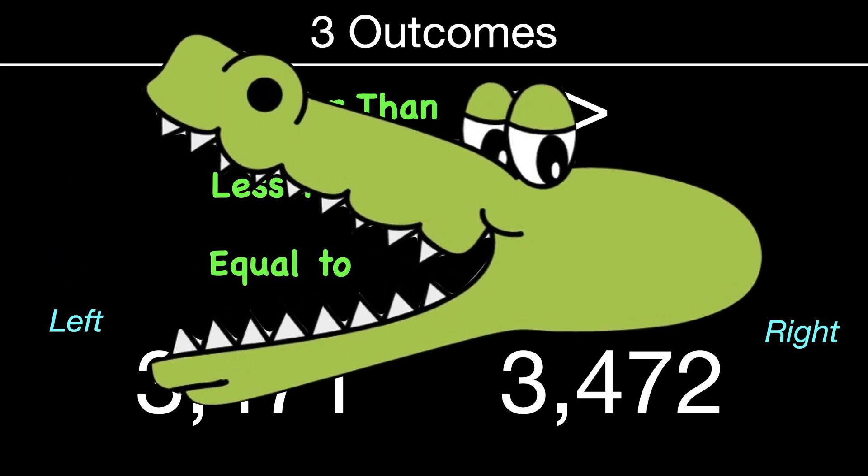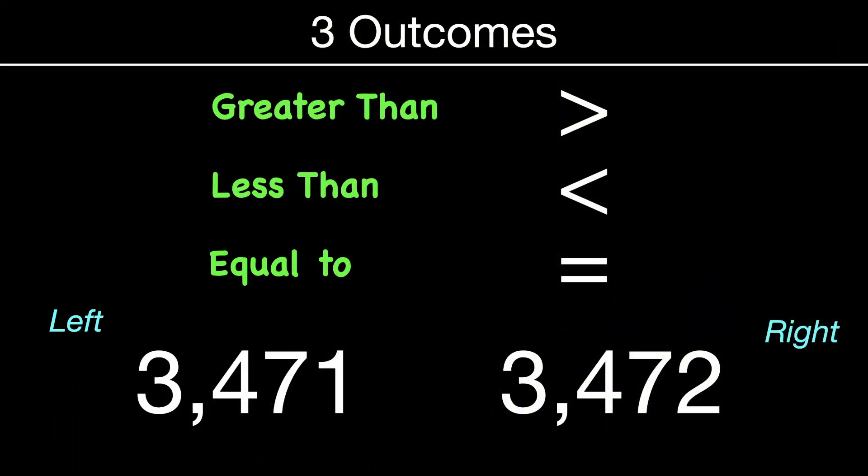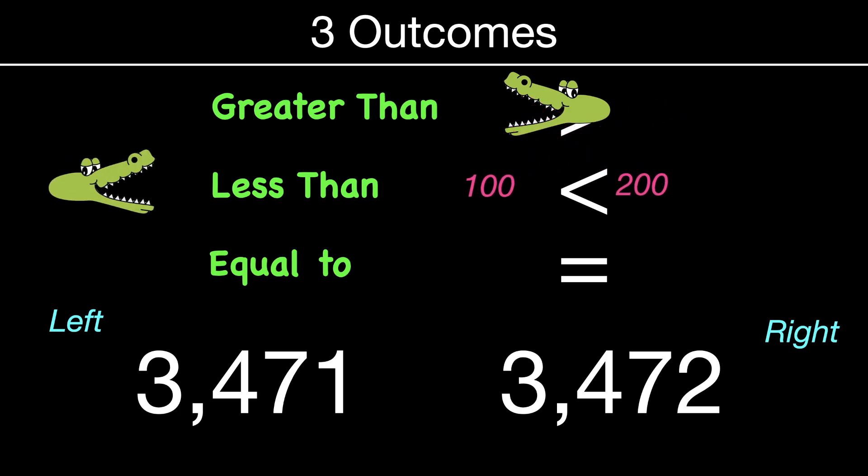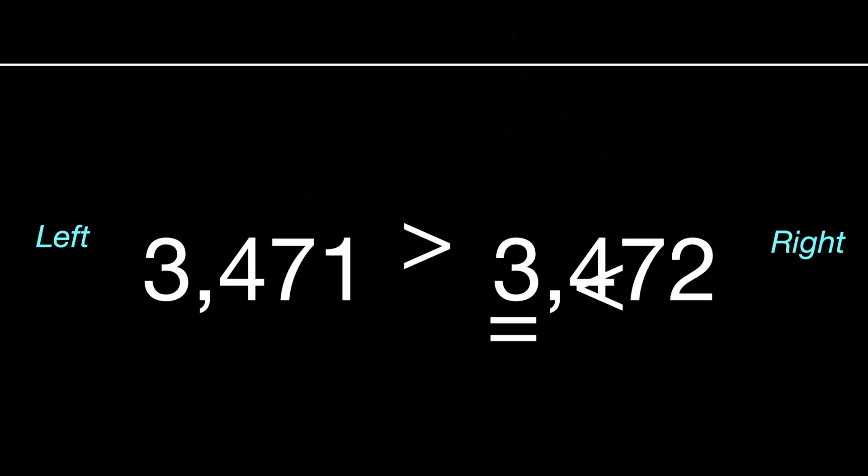And I'm sure we've all heard in first and second grade about the hungry alligator. So for example, if you're comparing numbers that are smaller, like 200 and 100, the hungry alligator always wants more. And it doesn't matter if it's going the opposite direction. It's not really a bad strategy to help you remember. Some kids have a hard time remembering which way to make the symbol. So that might be helpful today.